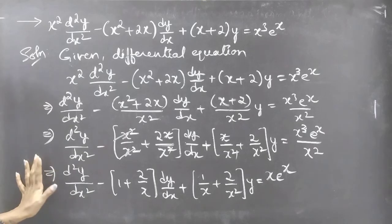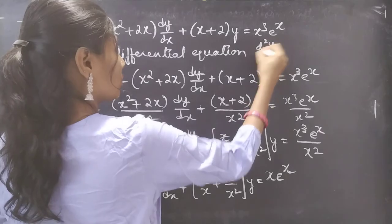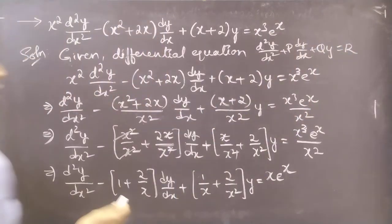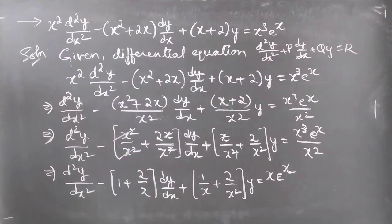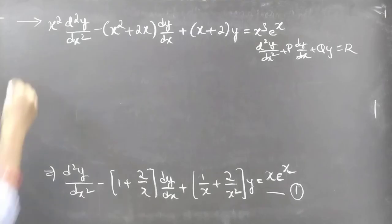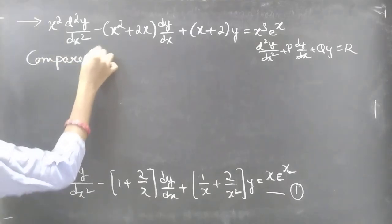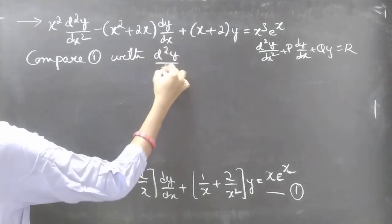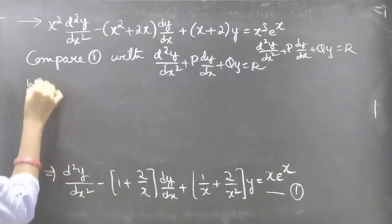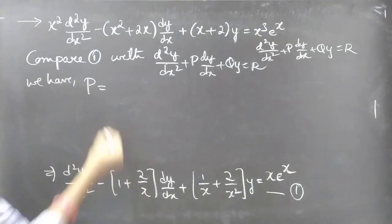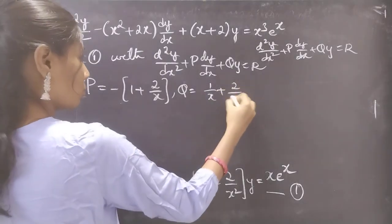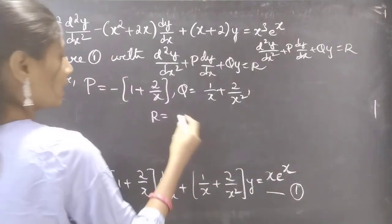Now we compare this equation with the standard second order linear equation d²y/dx² plus P times dy/dx plus Q times y equals R, which we will call equation 1. Comparing, we get P equals minus(1 plus 2/x), Q equals 1/x plus 2/x², and R equals x times e to the power x.